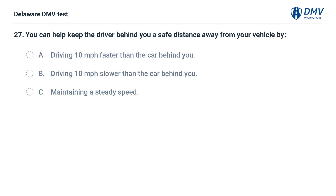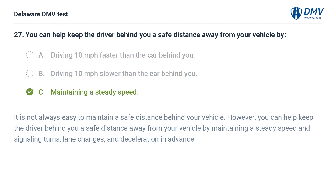You can help keep the driver behind you a safe distance away from your vehicle by: A. Driving 10 miles per hour faster than the car behind you. B. Driving 10 miles per hour slower than the car behind you. C. Maintaining a steady speed. Answer: C. You can help keep the driver behind you a safe distance away by maintaining a steady speed and signaling turns, lane changes, and deceleration in advance.